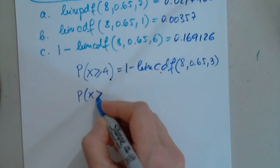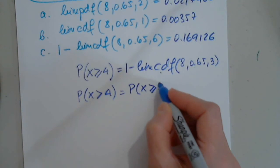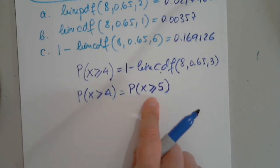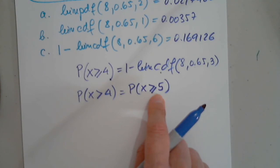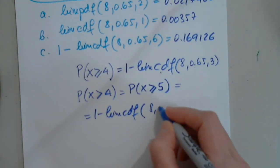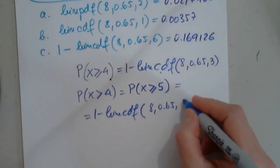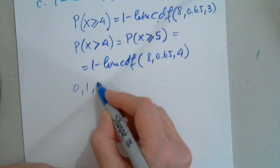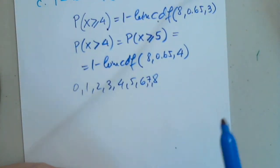So, for example, for this here, if I have x greater than or equal to 4, I have from 4 to 8, so I have 1 minus binomial CDF of 8, 0.65, 3, because I'm subtracting this. If I want the probability for x greater than or equal to 5, that is the same with the probability for x to be greater than 4. These two are the same. Because here, I cannot include 4. And this, I have to start at 5.